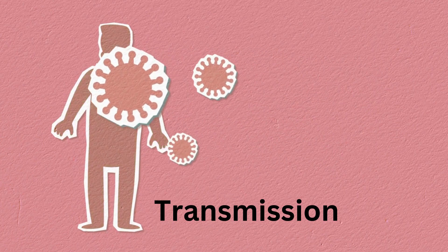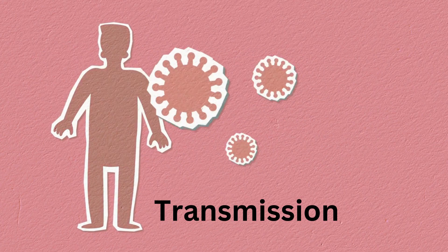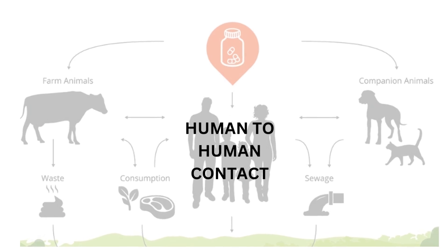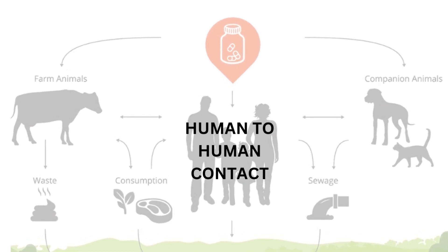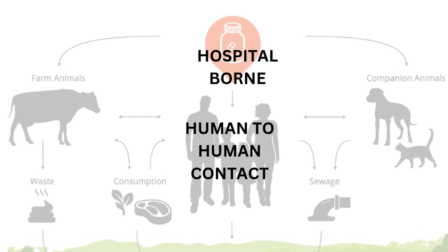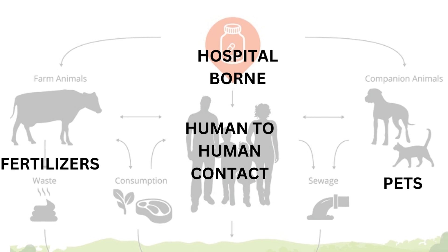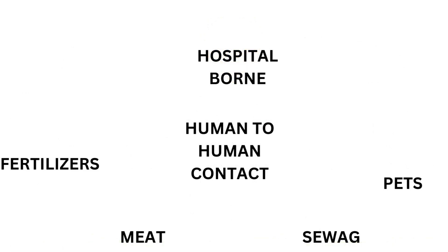The transmission of AMR can be via human-to-human contact, hospital-born infection, contact with pets, agricultural fertilizer, contaminated meat, and sewage effluents.